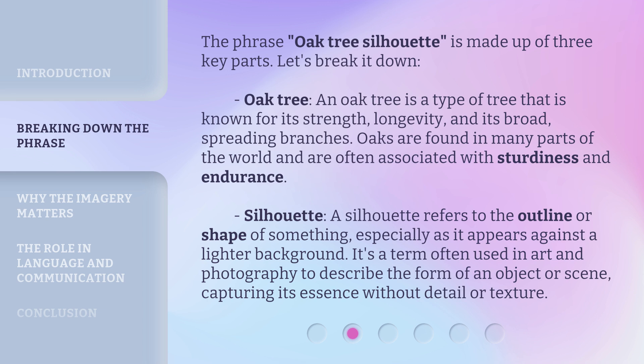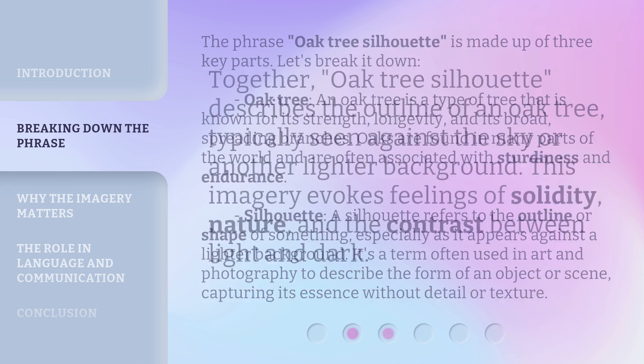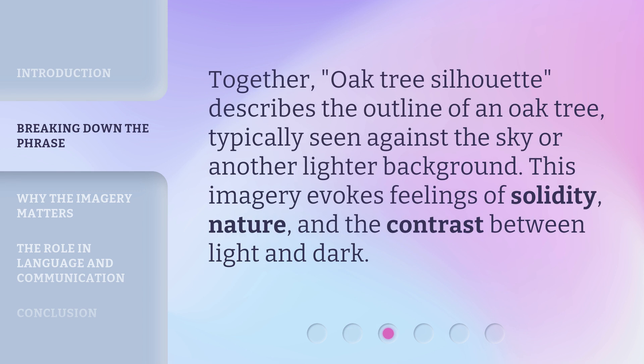Silhouette: a silhouette refers to the outline or shape of something, especially as it appears against a lighter background. It's a term often used in art and photography to describe the form of an object or scene, capturing its essence without detail or texture. Together, Oak Tree Silhouette describes the outline of an oak tree, typically seen against the sky or another lighter background, evoking feelings of solidity, nature, and the contrast between light and dark.